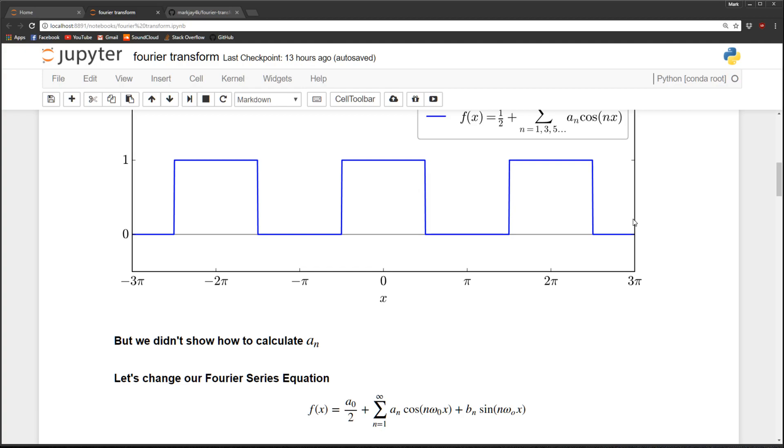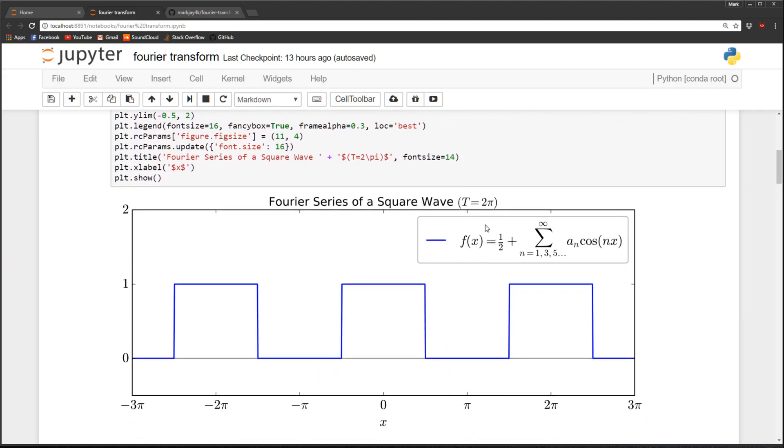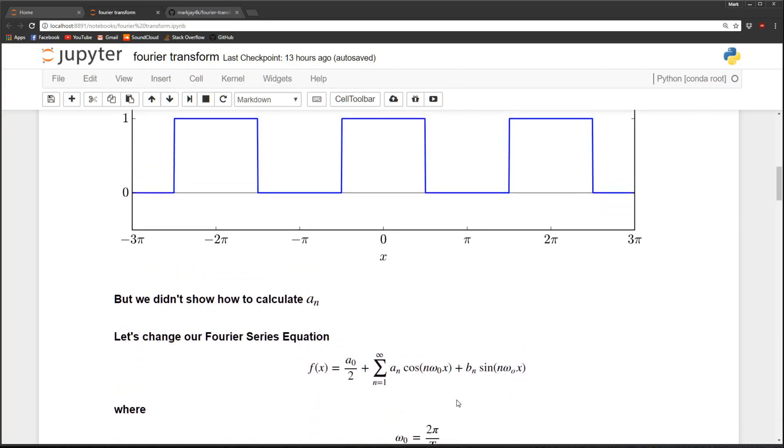So the first change I want to do is introduce a new variable called the frequency. So the frequency we call it omega naught, and it's just two pi divided by the period. So for this wave the period is two pi, so you can see after two pi the wave repeats.